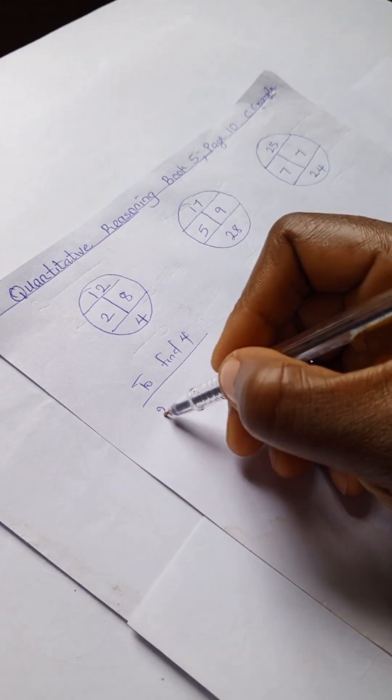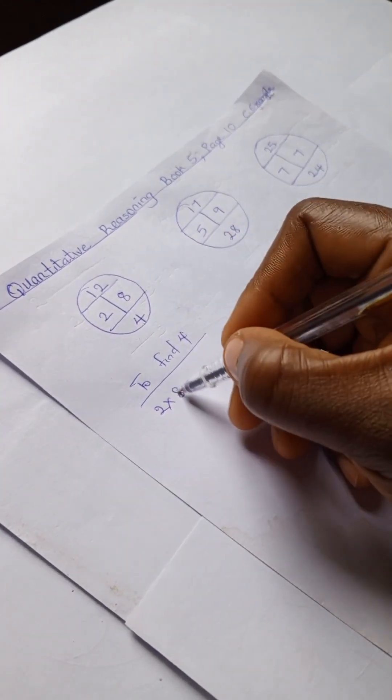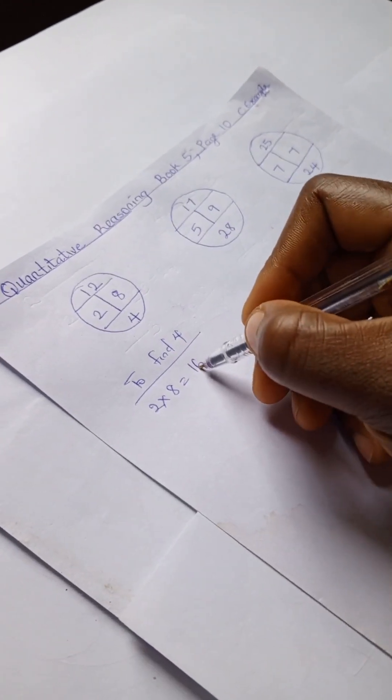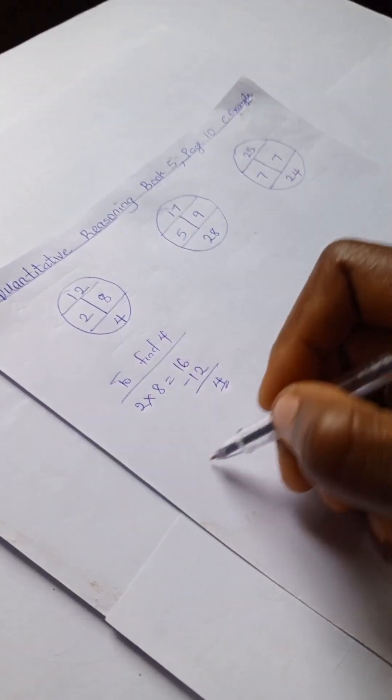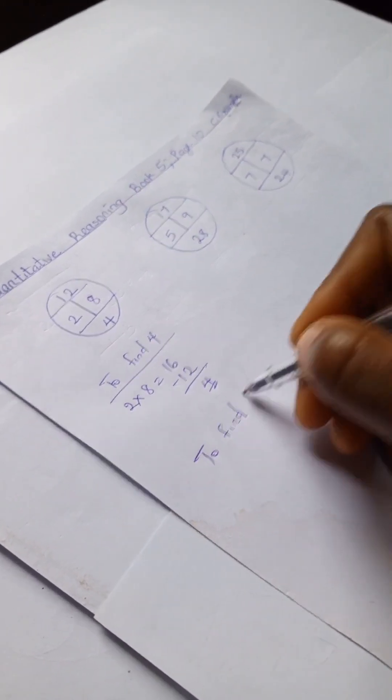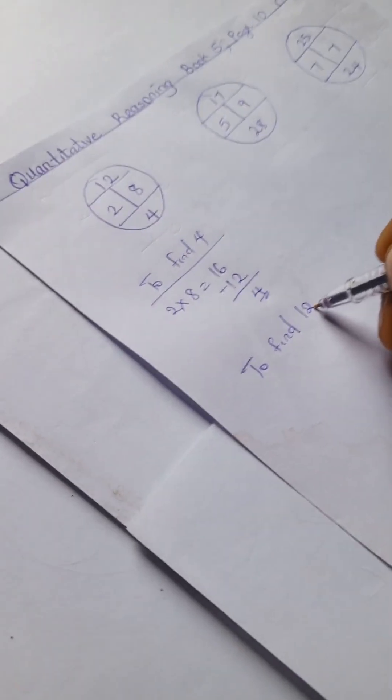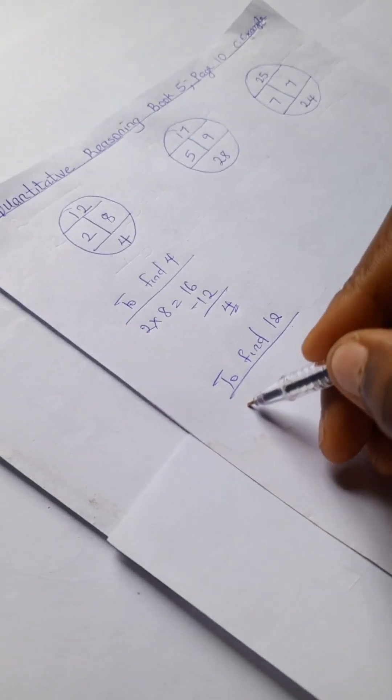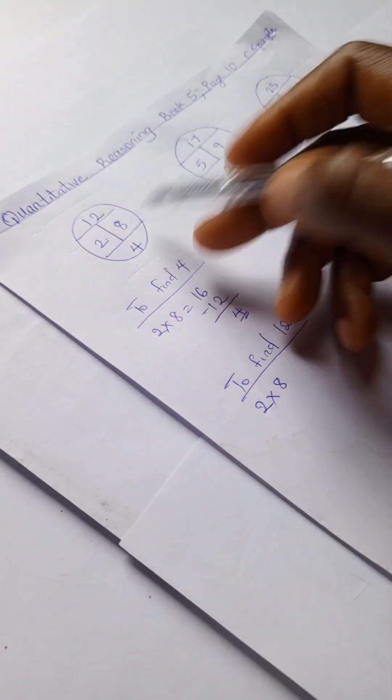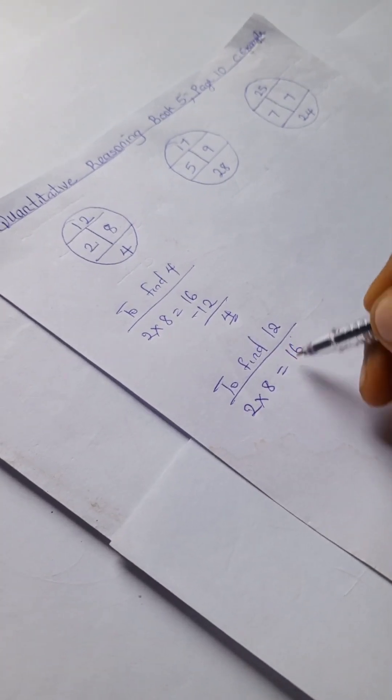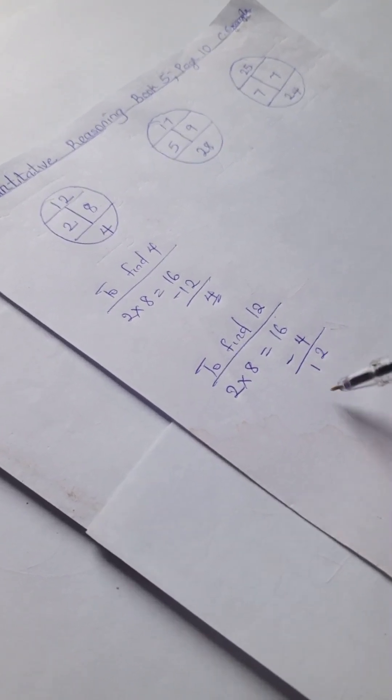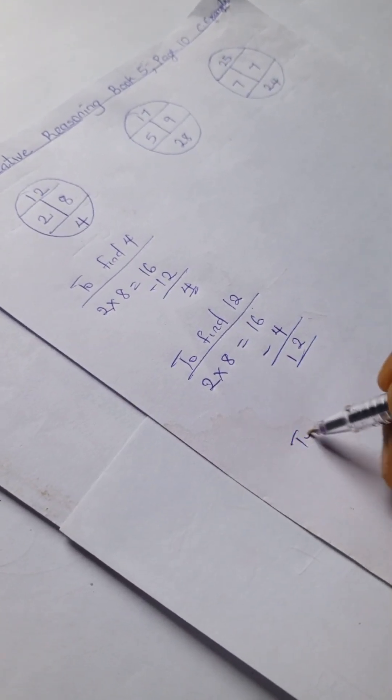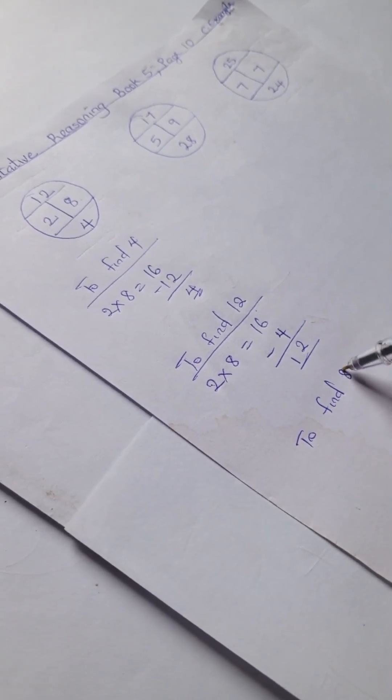To find 4, we have 2 times 8 is 16, right? 16 minus 12 is 4. To find 12, we have 2 times 8 is 16, and 16 minus 4 is 12.